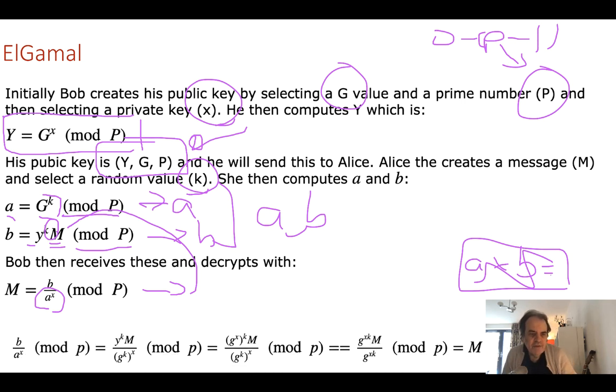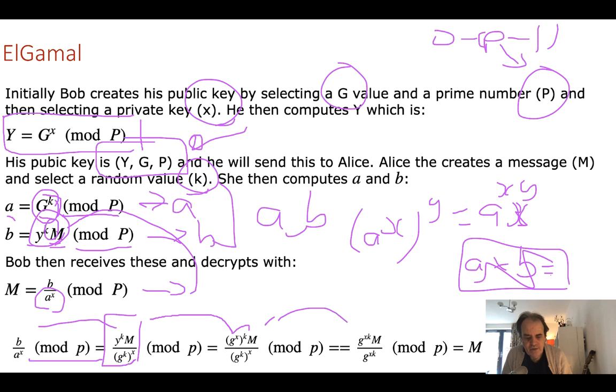How does this work? Well, if we do a bit of the maths, B is actually Y to the power of K times M, and A to the power of X is G to the power of K. From here, the Y value is G to the power of X to the power of K, and because of discrete logs, A to the power of X to the power of Y equals A to the power of XY. So then we end up with G to the power of XK divided by G to the power of XK times M. They cancel out and we end up with the message, and that's the way that the ElGamal method works.